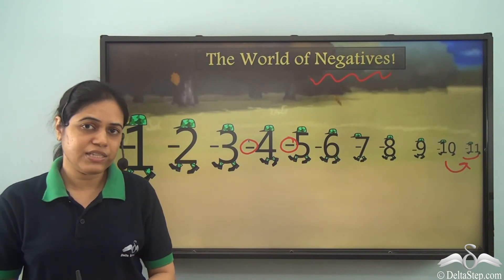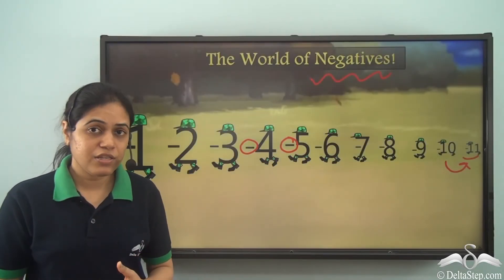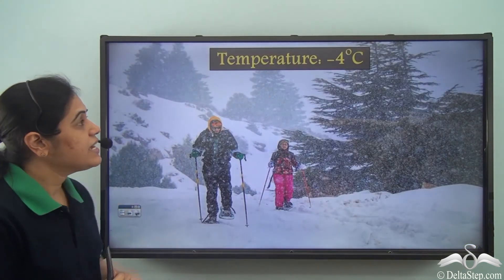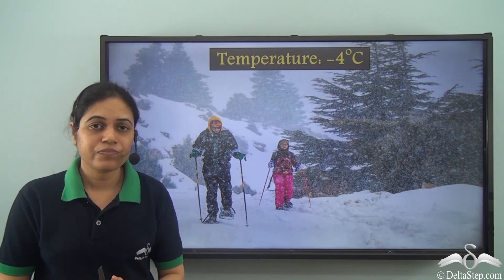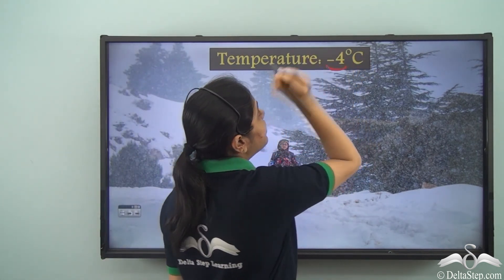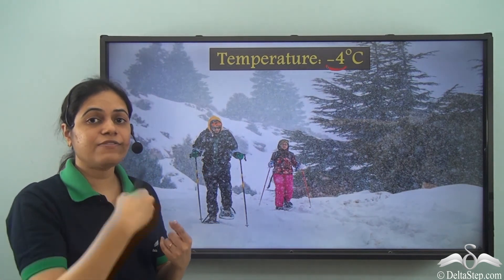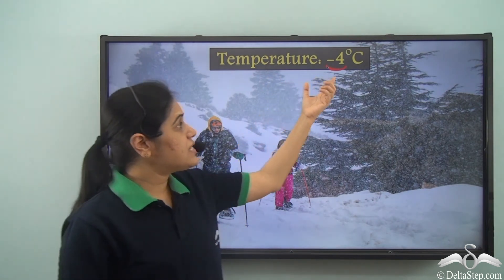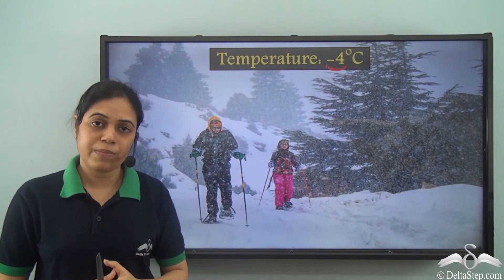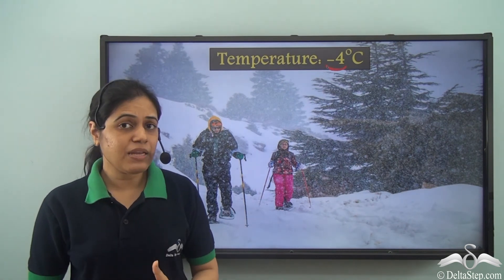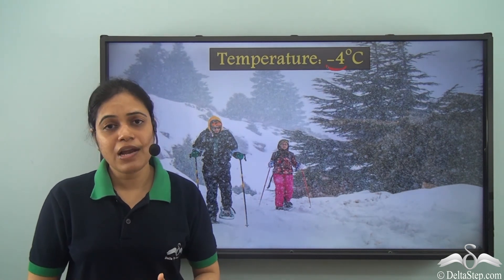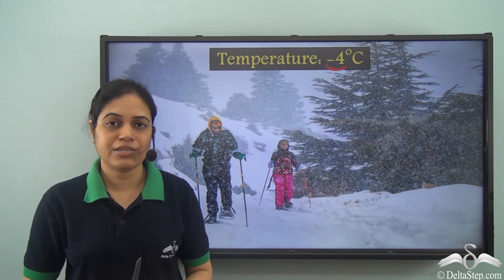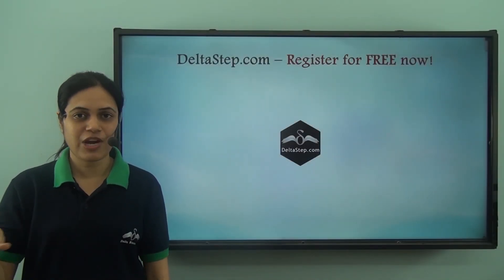But you may be thinking: what is the use of these negative numbers? Why are we studying them? Have you ever read in the newspapers or heard in the news that the temperature of a place is negative four degrees Celsius? So this is actually the number negative four — negative one, negative two, negative three, and then negative four. This is one of the places where negative numbers are used.